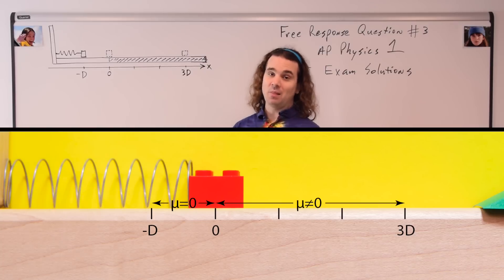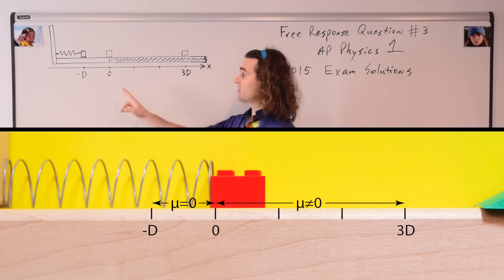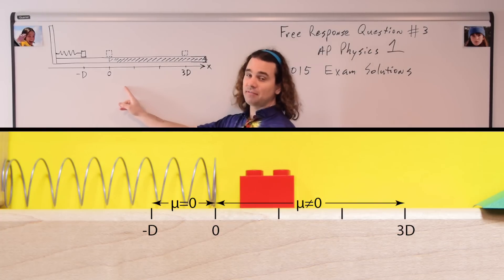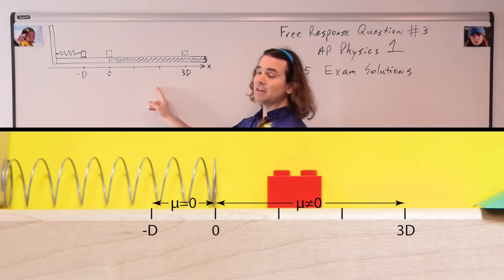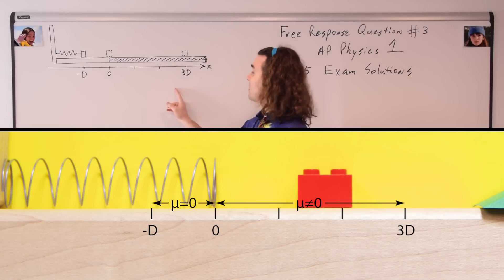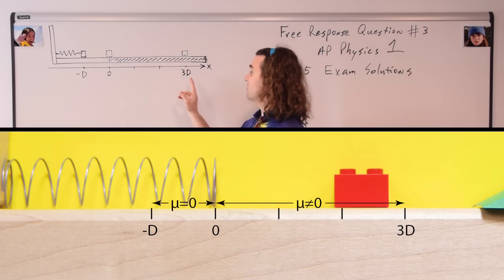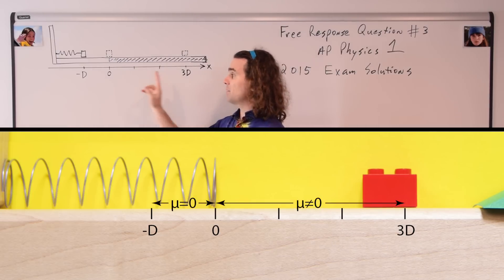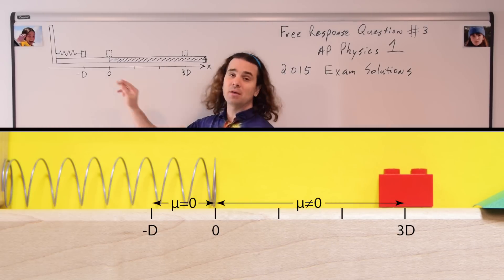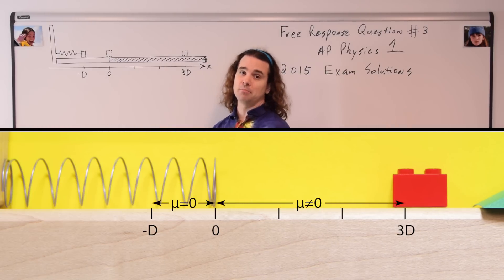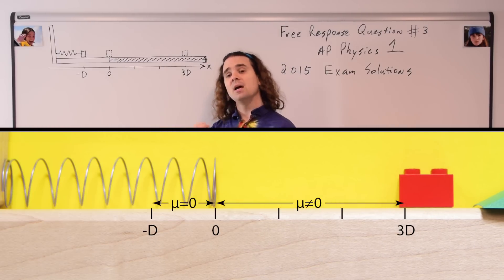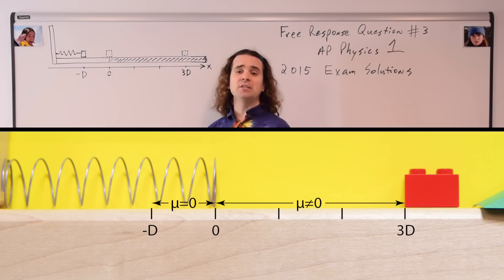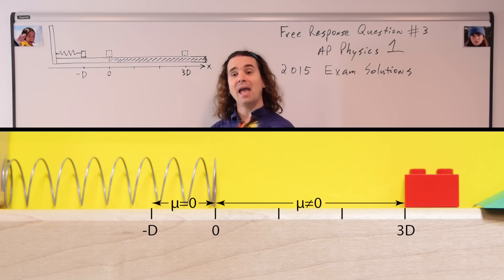The block continues to slide along the rough surface until it eventually comes to a stop, a distance three capital D from the equilibrium position. Bobby, could you please read part A part i and part ii?